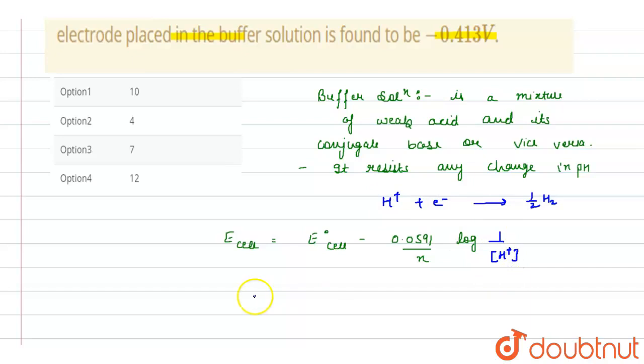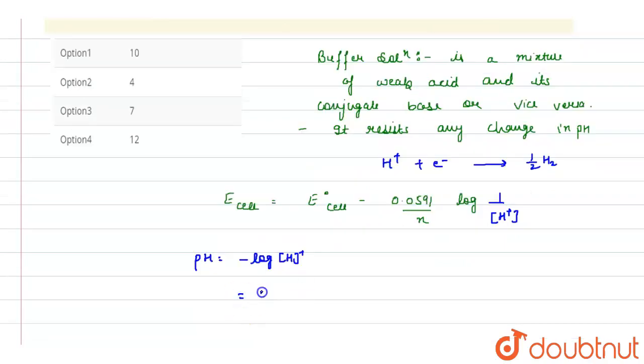And if we see, pH is equals to minus log H positive, and it can be also written as log of one upon H positive.